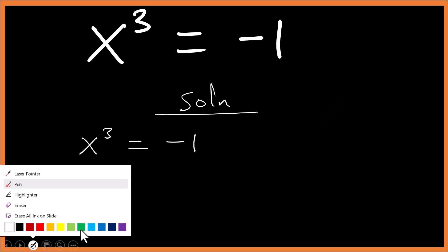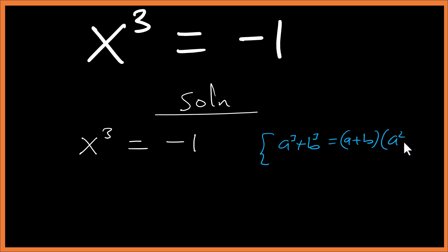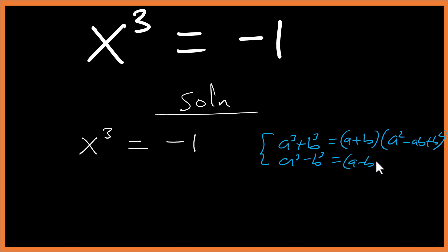Before we proceed, let's understand the sum and difference of cubes. Sum of cubes: a cubed plus b cubed equals a plus b times a squared plus ab plus b squared. For difference of cubes: a cubed minus b cubed equals a minus b times a squared plus ab plus b squared.